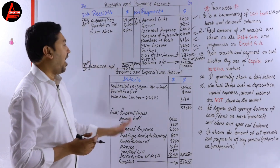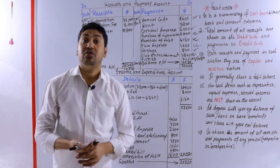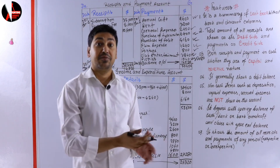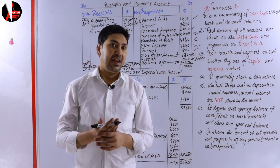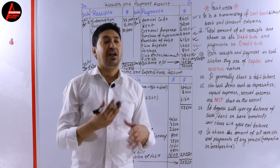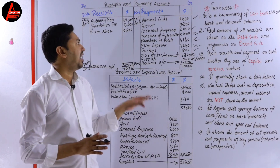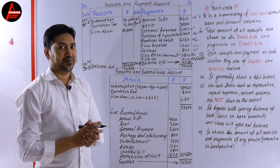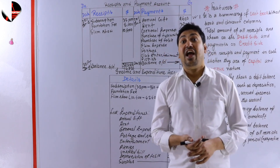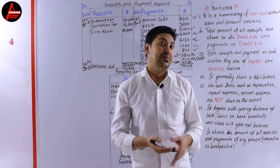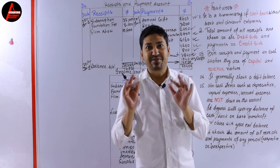I hope you understood how to prepare the receipt and payment account and the income and expenditure account. Next time I'll show you how to prepare the subscription account and the statement of financial position, which is the balance sheet, and I'll show you some more practice questions. Please share this lesson with your friends so they will also benefit. For more videos please subscribe to my channel - see you soon, bye bye.